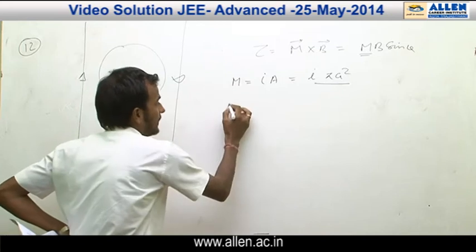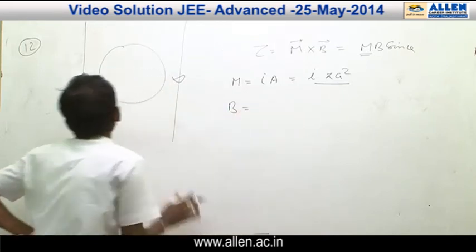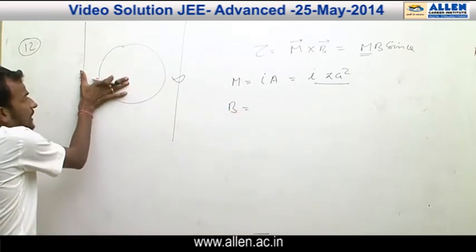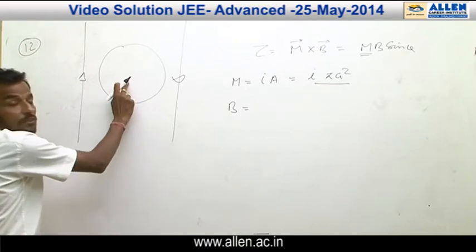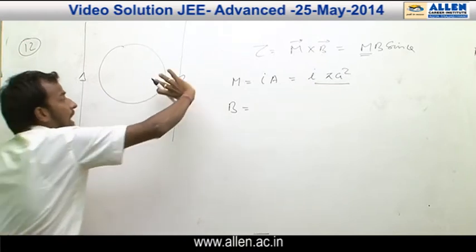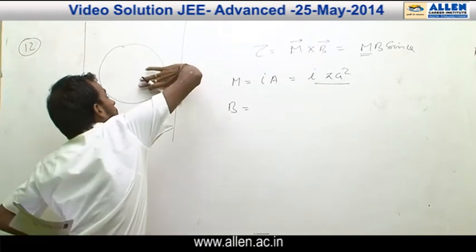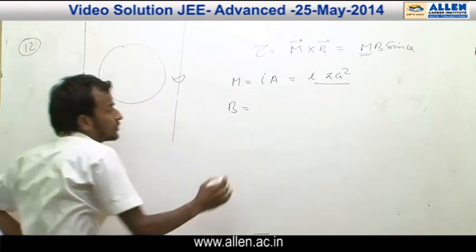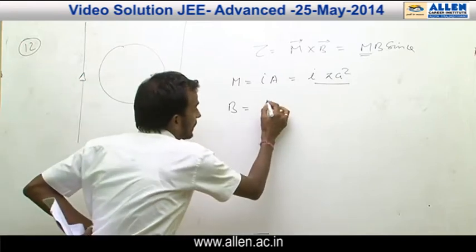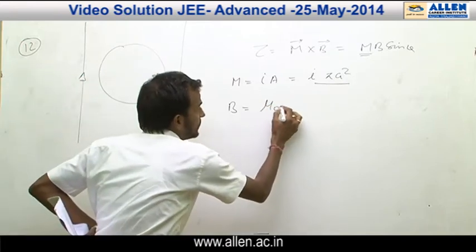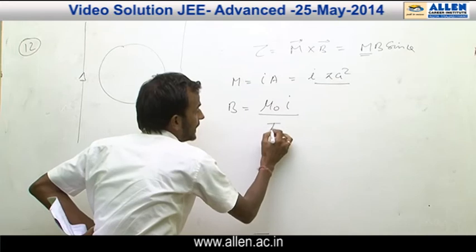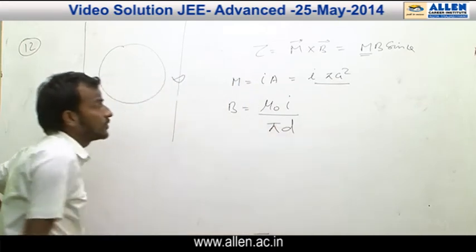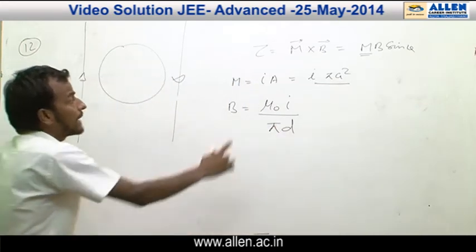The magnetic field due to both wires is in the inward direction. The magnetic field due to this wire is inward and the magnetic field due to the other wire is also inward. Therefore, by adding these two magnetic fields, we will get μ₀I / (πD).